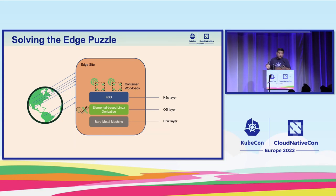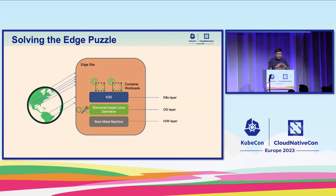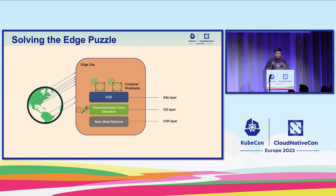Solving the edge puzzle: we now have this stack with layers. The hardware layer includes bare metal machines, edge IoT devices, or virtual machines. On top of that, the OS layer with the Elemental-based Linux derivative, using the Elemental Toolkit to create the bootable container OS image and the System Upgrade Controller to manage lifecycle patching and upgrades of both the OS and Kubernetes. And the Kubernetes layer with K3S — deployable at any edge sites across the globe.